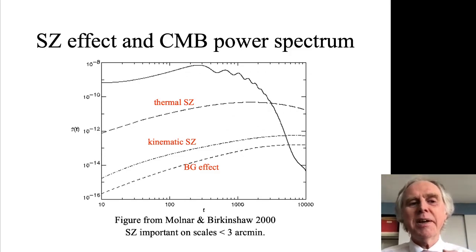The bottom curve shows the so-called Birkinshaw-Gull effect, which is like the kinematic effect, but rather than being along the line of sight, it's a transverse effect. It comes about by gravitational lensing of the microwave background radiation. You can see that the SZ effects start to cut in and affect the power spectrum at mode numbers L greater than about 2,000 or 3,000.